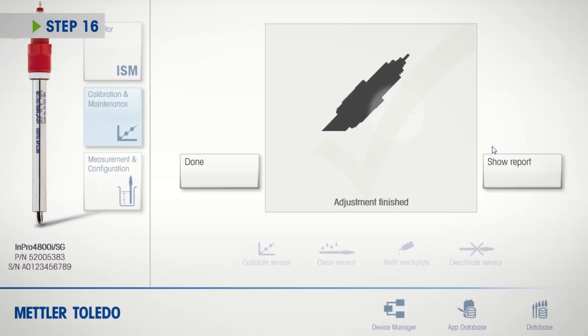If required, generate an adjustment report in PDF format by clicking Show Report.